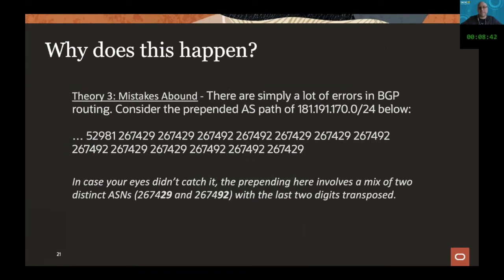Lastly, mistakes abound. If you've spent any time looking at BGP data, you can see a lot of prepending errors of various stripes. Here's an example: there's a four-repeating AS, but if you look very closely, the final two digits go from 2929 to 9292 to 9292 — there's an error that's getting repeated. I think this just isn't a priority to go and clean up.